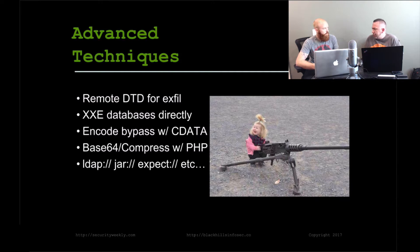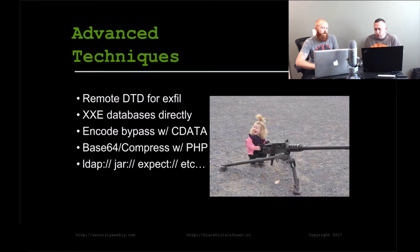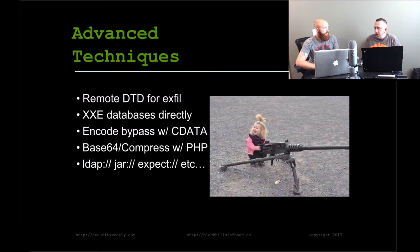XML has to be well-formed and abide by the XML structure, otherwise the parser breaks. To get around special character restrictions, you can use CDATA within XML, which tells the parser to interpret the content as normal text and not XML markup. When you get into more severe languages like PHP, you can use PHP filters — passing in `php://filter` — and encode the output into Base64 or compress it using Zlib. So you could read in something like /etc/passwd, do Base64 encoding on it, send it back to the attacker, and it's over.